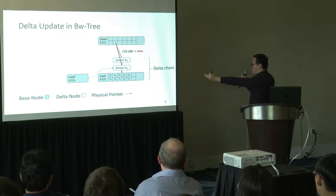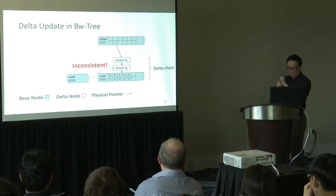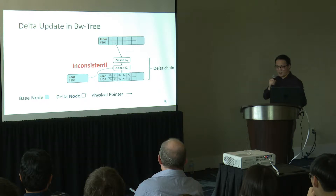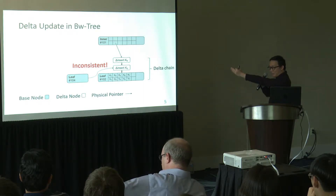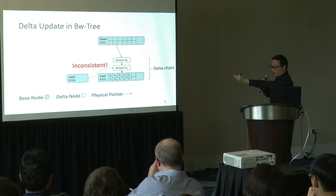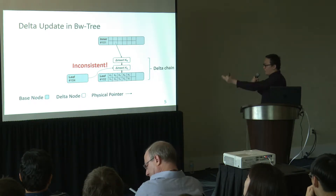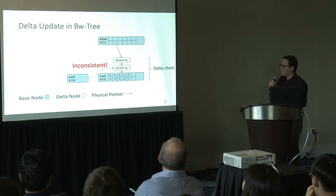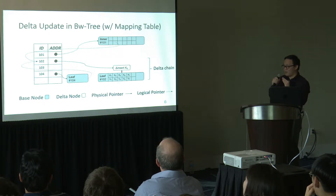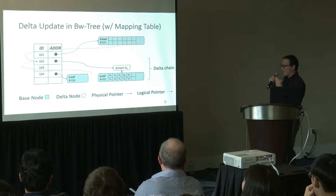Now we have a linked list structure on top of the base node, which Microsoft calls the delta chain. However, this simple way of updating a base node is wrong because it introduces inconsistent results. In the previous example, after the update, if another worker thread traverses to leaf node 102 from its sibling 104 through the sibling link, that worker thread would observe an inconsistent view because it can't see the most up-to-date snapshot of the delta chain. To solve that problem, the original BW Tree paper added something called a mapping table.